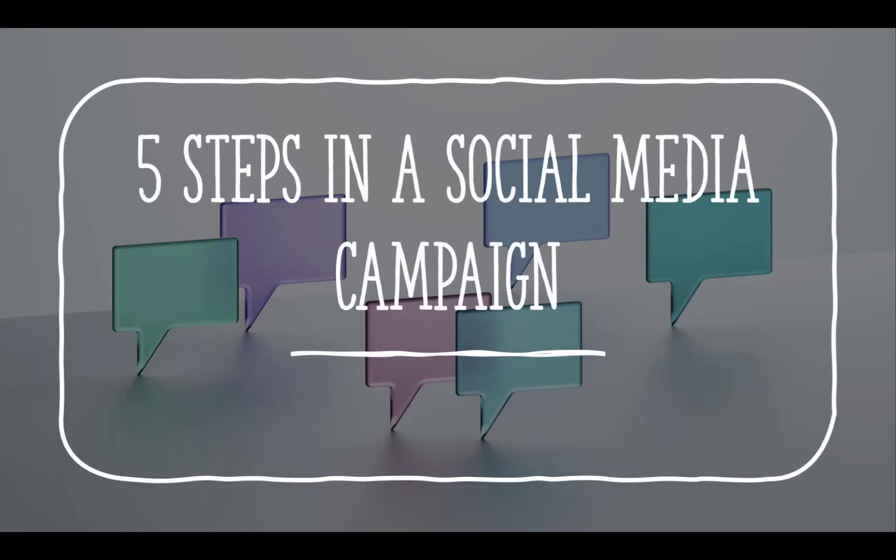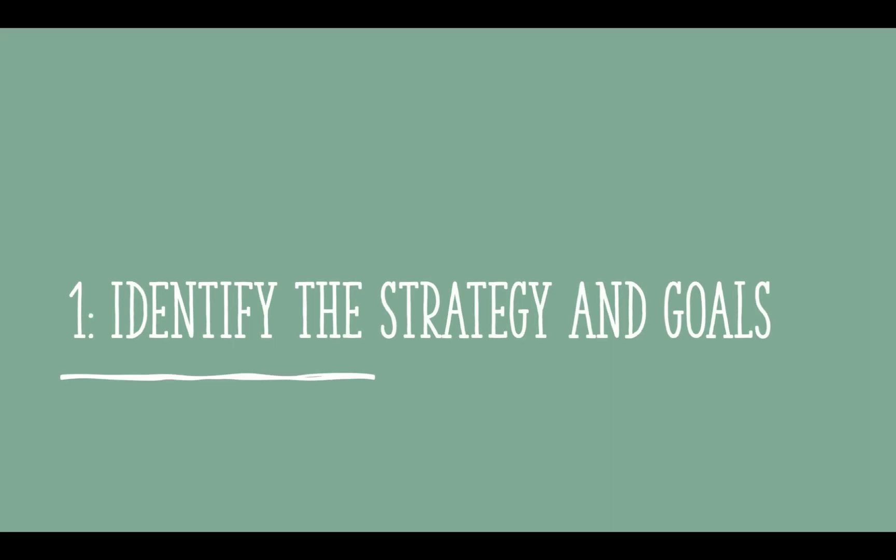When you are thinking about social media campaigns or digital marketing in general, there are five steps that go into it. The first one: identify the strategy and goals. You have to know what you are going to be selling or talking about, and you have to know what you want out of that — otherwise, you can't make a plan.